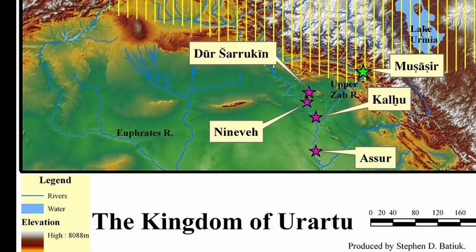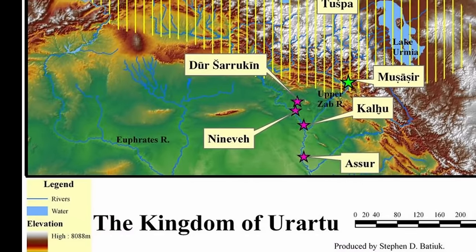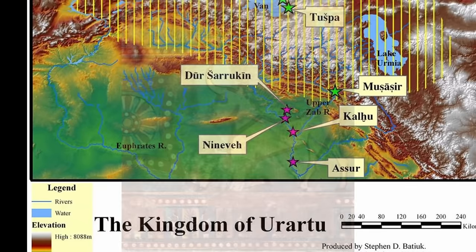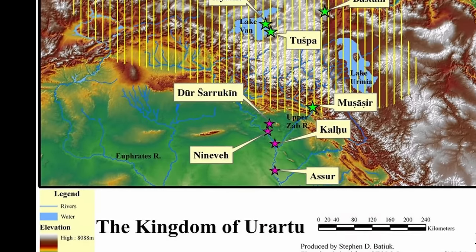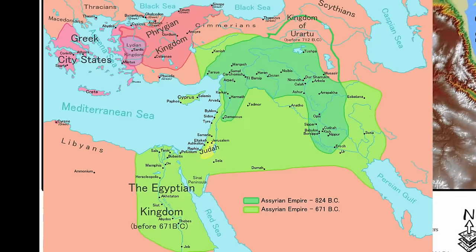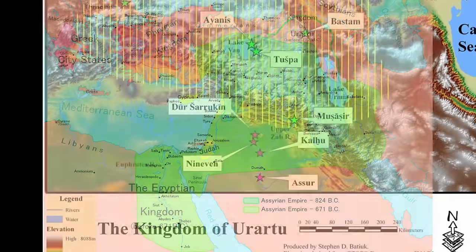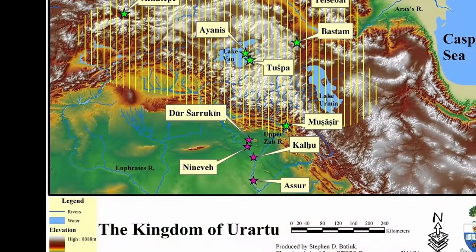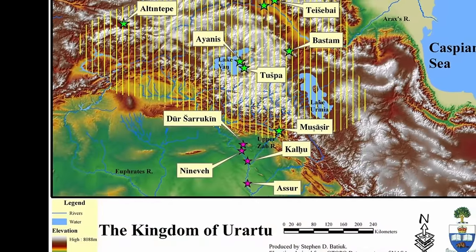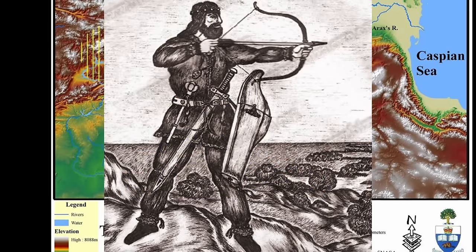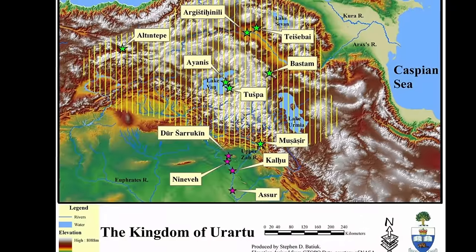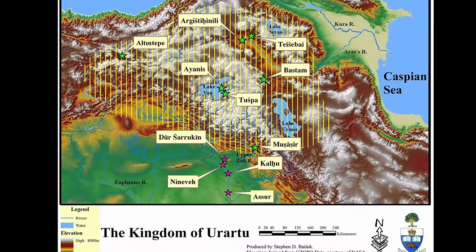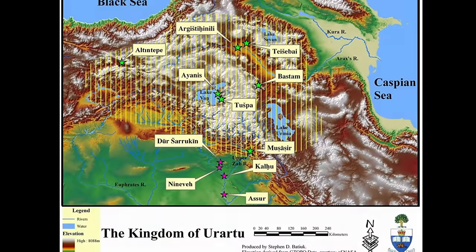Urartu was an ancient kingdom in the Armenian highlands, including parts of Turkey, Iran, and Armenia. The kingdom was around from 860 to 590 BC and flourished alongside other empires at first, like the Neo-Assyrian Empire. The decline of Urartu is attributed to a combination of factors including invasions by the Scythians and the expanding Neo-Assyrian Empire. The Assyrians eventually conquered the Urartu capital, Tushpa, in the 7th century BC.